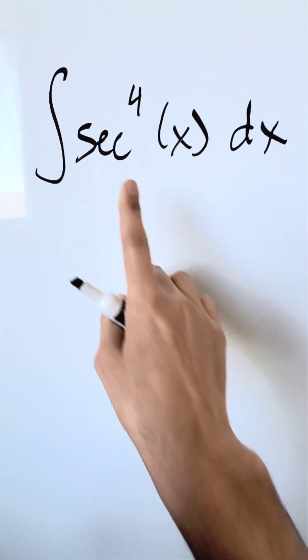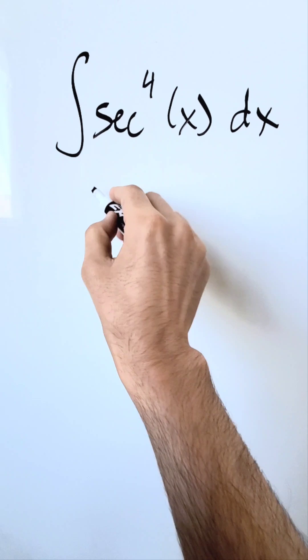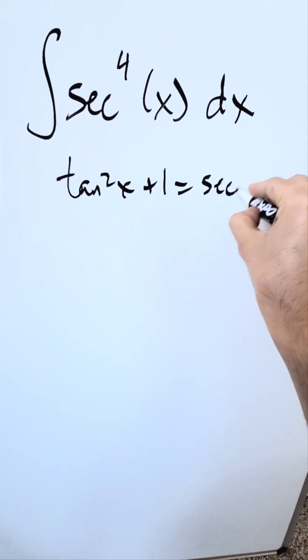Let's determine the anti-derivative of secant to the power of 4x. Start here with this identity. You know it. Tan squared x plus 1 is always equal to secant squared x.